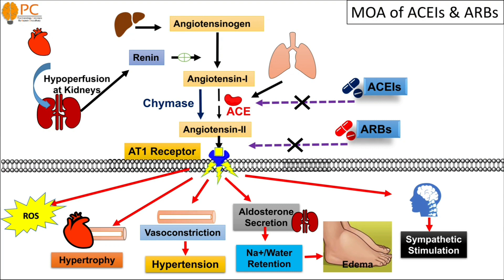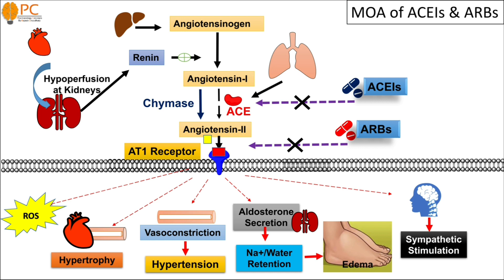ARBs are structural analogs of angiotensin 2, and they bind to AT1 receptors, decreasing their activation and completely inhibiting the effects of angiotensin 2. ARBs decrease vasoconstriction, decrease hypertrophy, decrease sodium and water retention, and decrease sympathetic stimulation by blocking AT1 receptors. These are the basic mechanisms of ARBs and ACE inhibitors and the basic physiology of the RAS system.